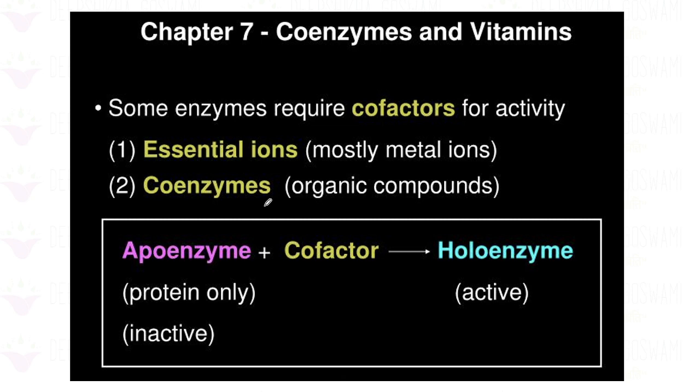Now let's talk about co-enzymes and vitamins. Some enzymes require co-factors for their activity. Co-factors include essential ions — mostly metal ions — and co-enzymes, which are organic compounds. An apo-enzyme together with a co-factor forms the complete active holoenzyme.